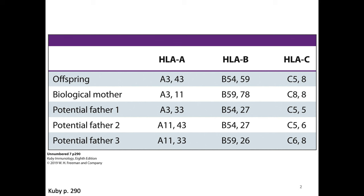We can also use this information to tell us the mom's haplotypes. We know one of mom's chromosomes is A3, B59, C8, because she had to pass those three together to the child. We know that mom's other chromosome has to be A11, B78, C8. For the two fathers who aren't the father, we can't tell anything about their haplotypes, but when we have parent and child data we can get this kind of information.